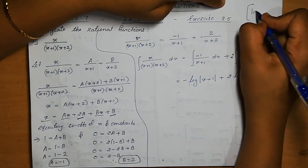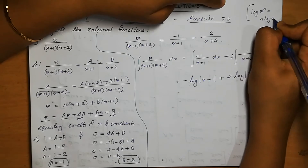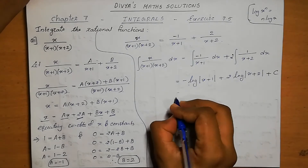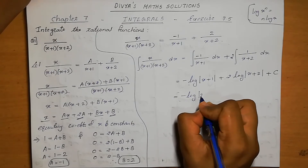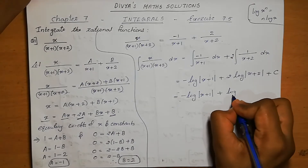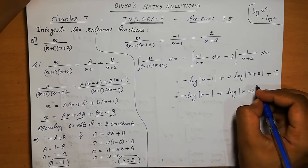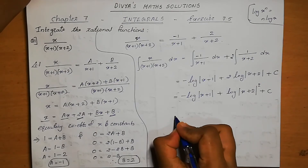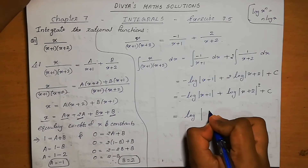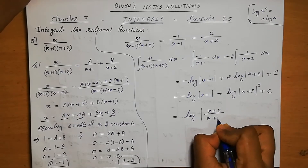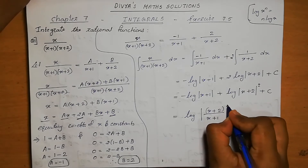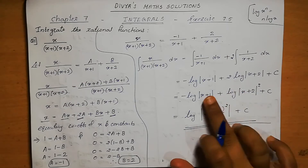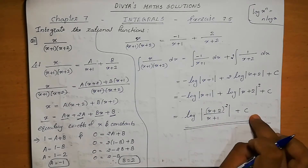Using the log property: n log x equals log x^n, we write 2 log|x plus 2| as log(x plus 2)². So, the answer is log(x plus 2)² minus log|x plus 1| plus c, which equals log|(x plus 2)² by (x plus 1)| plus c.